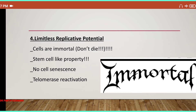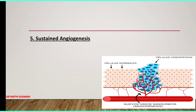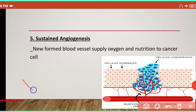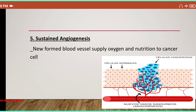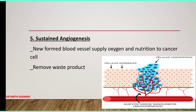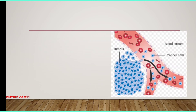If you want to understand cellular senescence in detail, I have already made a video on cellular aging covering that topic. The fifth mechanism is sustained angiogenesis. Tumor cells lead to new blood vessel formation through the release of vascular endothelial growth factor (VEGF). This angiogenesis provides oxygen and nutrition to the cancer cells, preventing them from dying, and also removes waste products of metabolism. Sustained angiogenesis supports cancer formation.